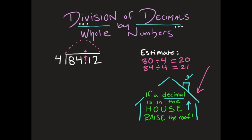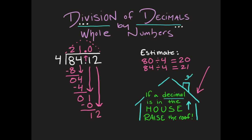Now I'll do division like you've done before — nothing is changing. How many times can 4 go into 8? Two. Two times 4 is 8, minus 8 is 0. Bring down 4. Four goes into 4 once. One times 4 is 4, minus 4 is 0. Bring down 1. Four goes into 1 zero times. Zero times 4 is 0, 1 minus 0 is 1. Bring down 2. How many times can 4 fit into 12? Three. Three times 4 is 12.